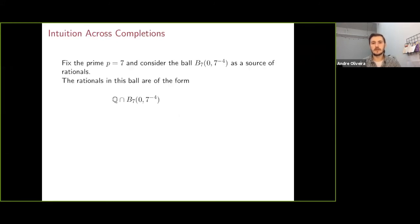If we consider the 7-adics and the following balls centered at the origin, and we use this as a source of rationals, we see that the rationals in this ball are going to be the following form. And so it's not too hard to see that these are going to be dense inside the real numbers.